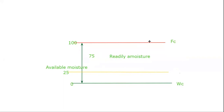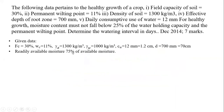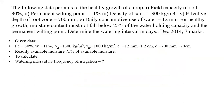So the readily available moisture is 75% of available moisture. Now the next parameter to calculate is the watering interval — that is the frequency of irrigation — meaning after how many days you will go for irrigation. That is, you will provide water to the field so that there will not be any sort of wilting of the crop.